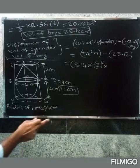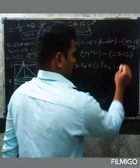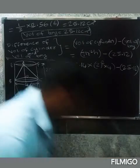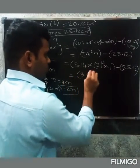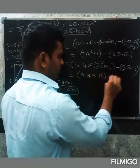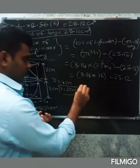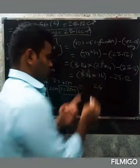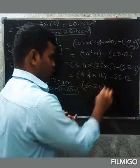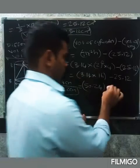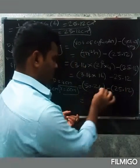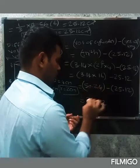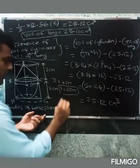So volume of cylinder = 3.14 × 2² × 4 = 3.14 × 4 × 4 = 3.14 × 16 = 50.24 cm³. Difference = 50.24 − 25.12 = 25.12 cm³. So the difference between volume of cylinder and tie is 25.12 cm³.